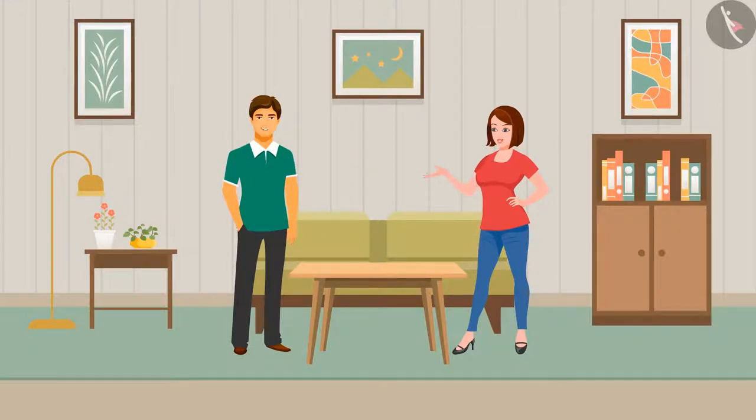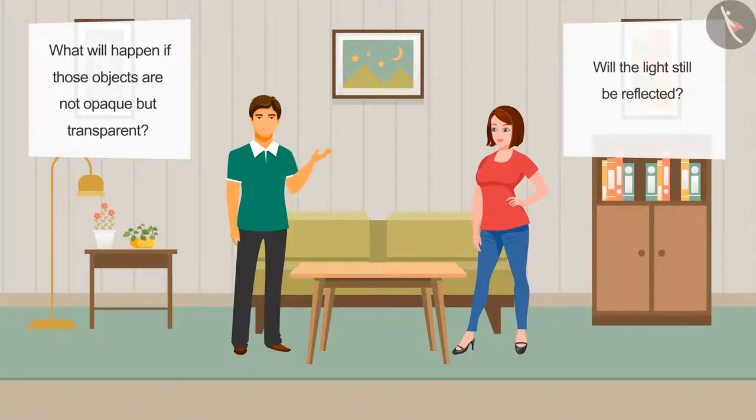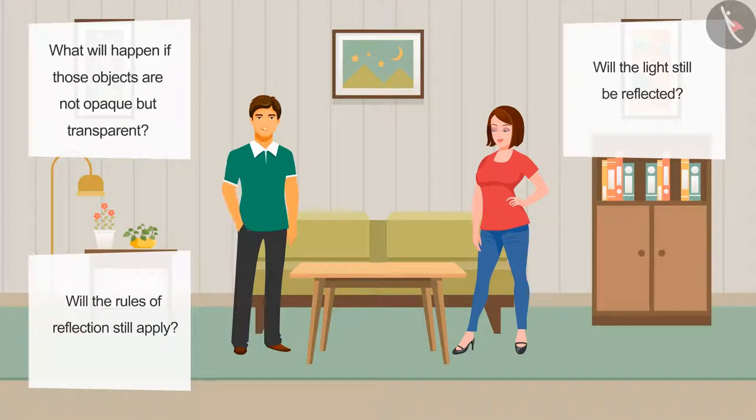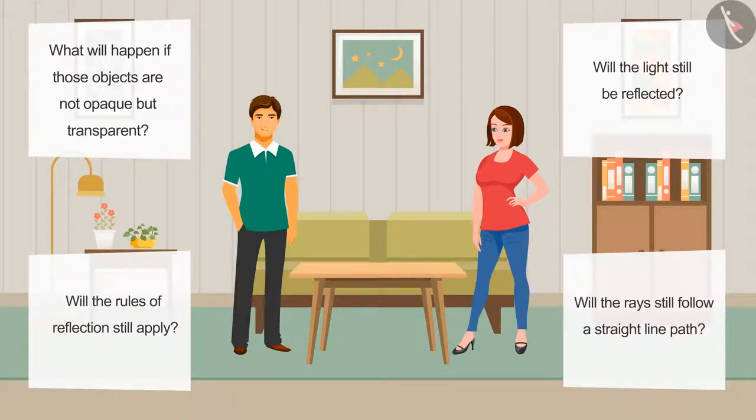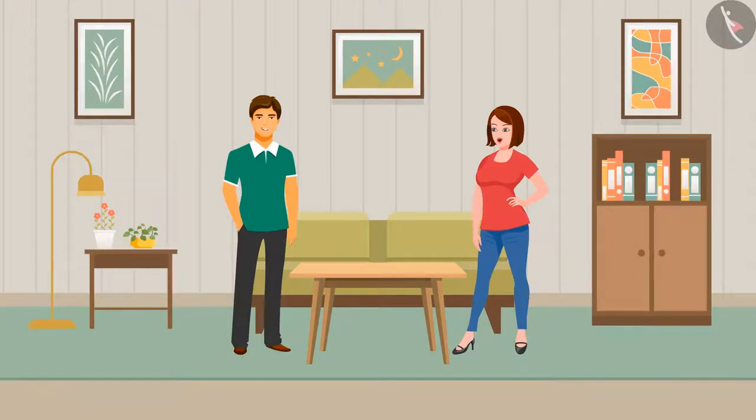Till now, what have you learnt Rahul? We have already learnt about light, reflection and how the rays of light get reflected by different objects. But Ayesha, there are some questions in my mind. What will happen if those objects are not opaque but transparent? Will the light still be reflected? Will the rules of reflection still apply? Will the rays still follow a straight line path? In today's video, we will discuss these questions and learn about a new phenomenon known as refraction.